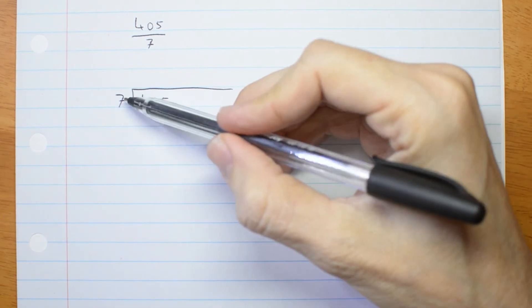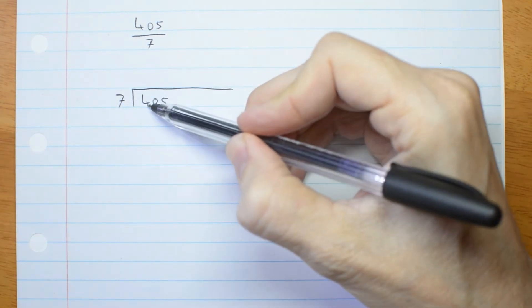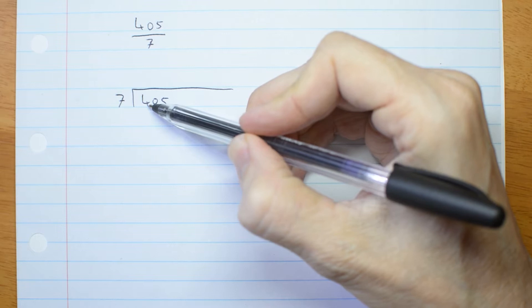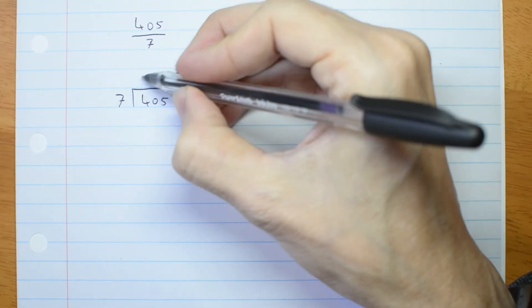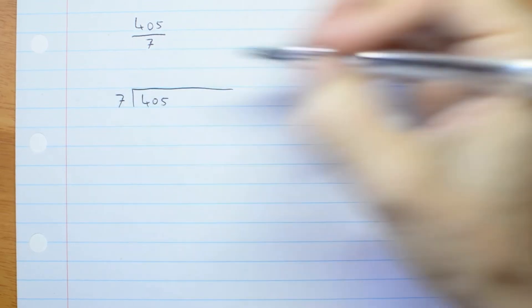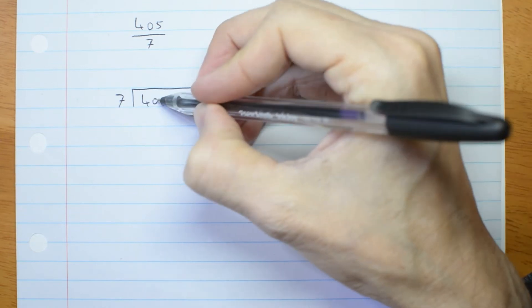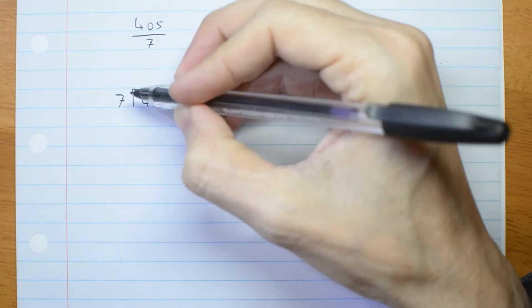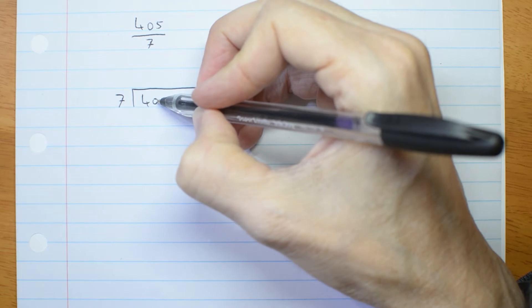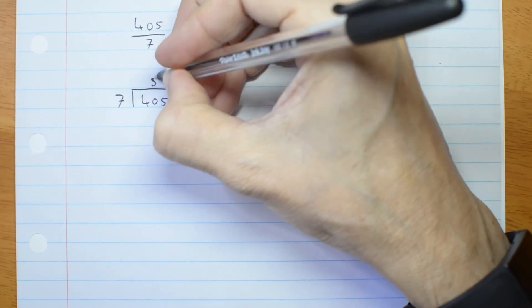And then I proceed. How many times does 7 go into 4? Well, it doesn't. I could write a 0 here but I don't need to because there's nothing to the left. And then I look at the next two digits instead. How many times does 7 go into 40? Well, that's 5 times.